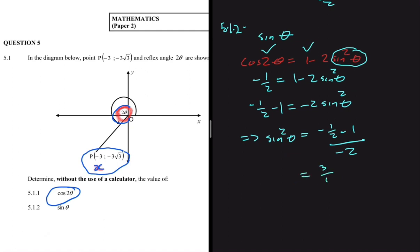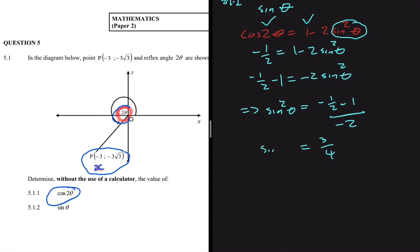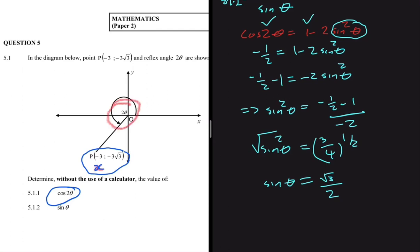Taking the square root of both sides, sin θ = √3 / √4 = √3 / 2. So our answer for this question is sin θ = √3 / 2. The key takeaway: when you get a question like this, don't rush to assume the angle is θ — always check whether it might be 2θ or any other form they could give you.